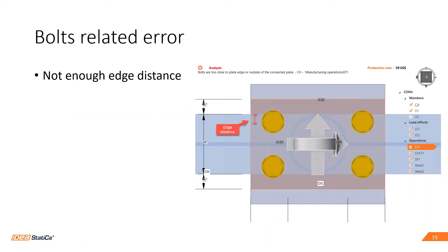Another issue that gives you a meshing error is not enough edge distance. The error will tell you which operation has the issue. In this example, it says 'bolts are too close to plate H' on member CH, manufacturing operation EP1 — that's the end plate. If you go to the transparent view, you can see the edge distance. There was not enough space to create the mesh elements there, which is why it stopped the analysis immediately.